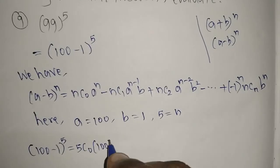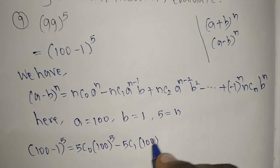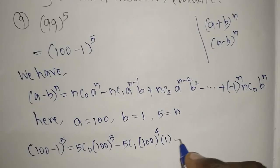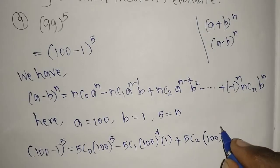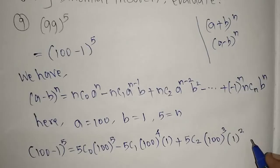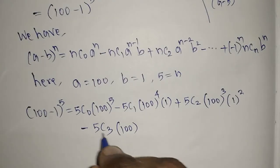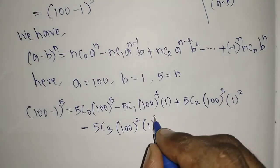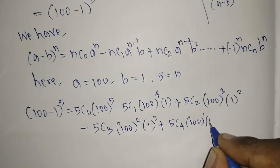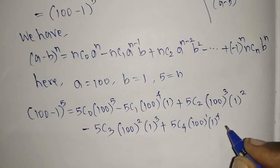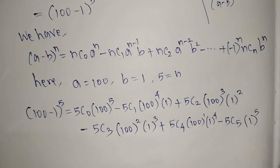Continuing the expansion: minus 5C1 * 100^4 * 1, plus 5C2 * 100^3 * 1^2, minus 5C3 * 100^2 * 1^3, plus 5C4 * 100^1 * 1^4, minus 5C5 * 1^5.